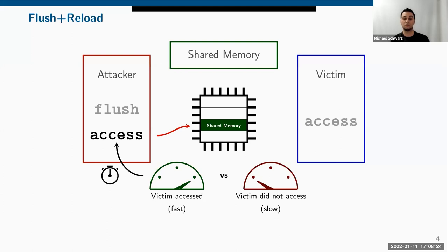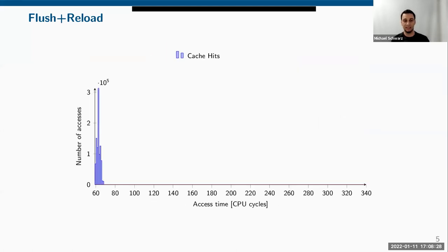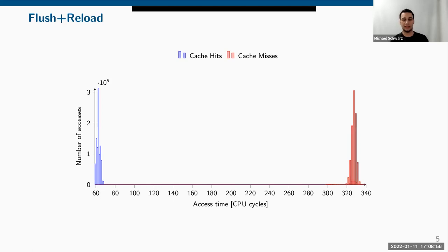From that timing, the attacker can learn whether the data is in the cache. If access is fast, it was served from the cache, meaning the victim accessed that part of shared memory. If it's slow, it had to be fetched from main memory, meaning the victim did not access it. We can see this clearly using timestamp counters: a cache hit is around 60 cycles on my laptop, while a cache miss requires at least 320 cycles to fetch from main memory.